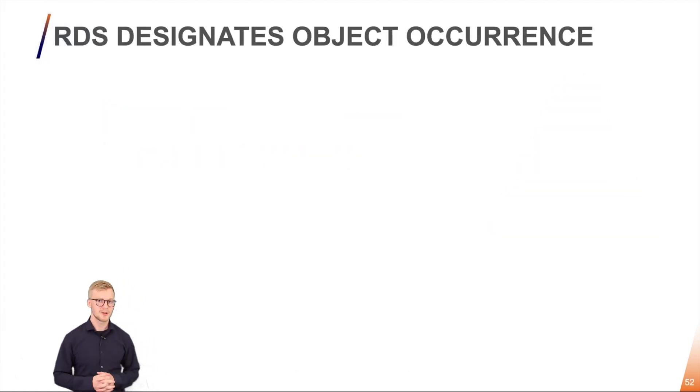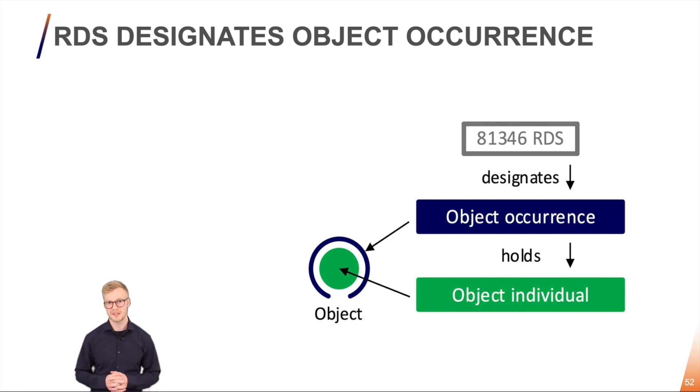So the first thing that we're going to take a look at today is the object occurrence versus object individual. RDS only designates the occurrences of objects. The occurrence then holds the object individual. Let's take a look at how that looks like.